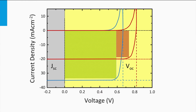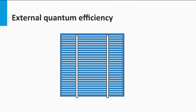An important conclusion of this simple exercise is that the choice of semiconductor material determines the open circuit voltage and the short circuit current density through its bandgap. Now we are going to look in more detail at how spectral utilization of a solar cell can be determined and measured.